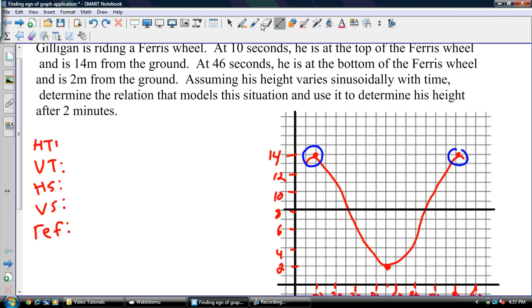Now what we need to do is fill in this stuff. My HT is just going to be whatever number is on my x-axis at that point. So that's 10. My VT is always going to be my sinusoidal axis, 8.